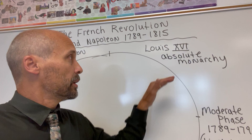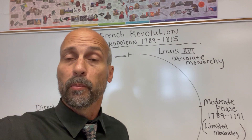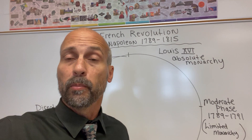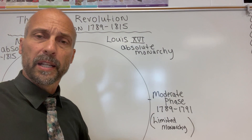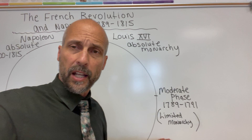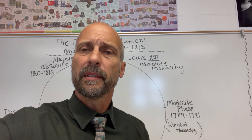Let me start at 1789. Louis the 16th is an absolute monarch — the undisputed leader of France. An absolute monarch is a king or queen that has total authority over their country, so in 1789 France has an absolute form of government in the form of King Louis the 16th. As we get to the first phase of the revolution, which I'm going to call the moderate phase — 1789 to 1791 — the major change is that France will become a limited monarchy. King Louis the 16th is still king but he's limited by a constitution.